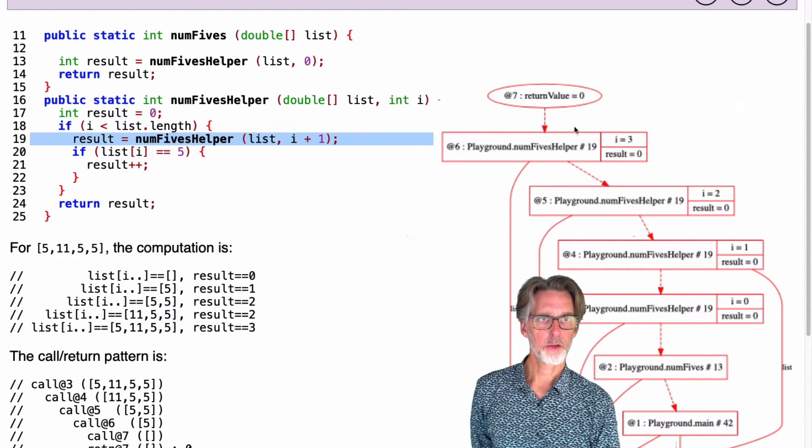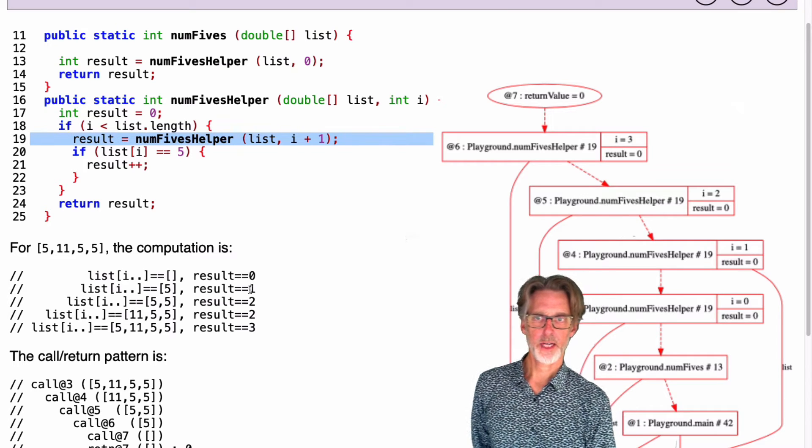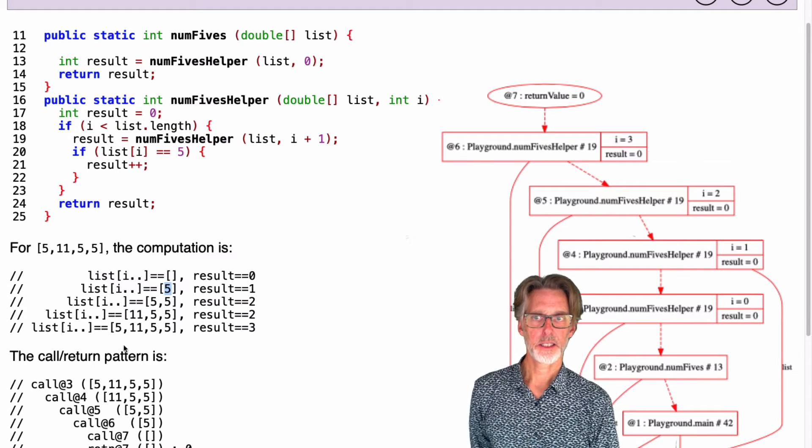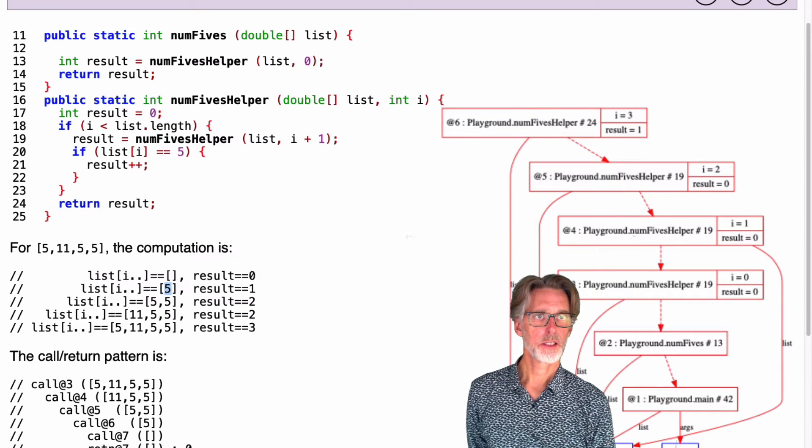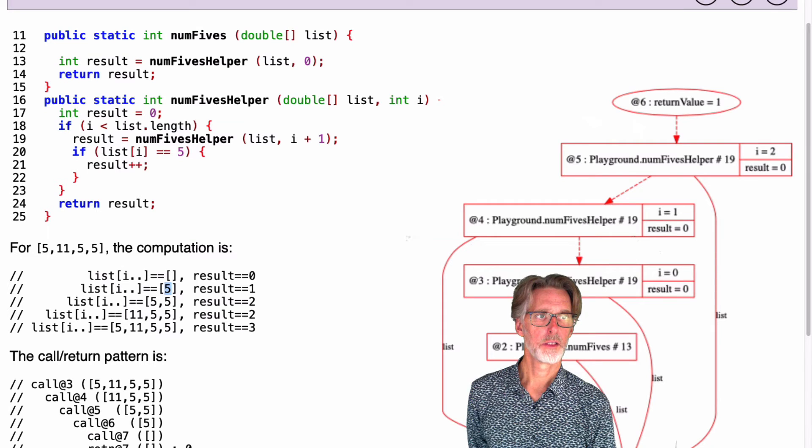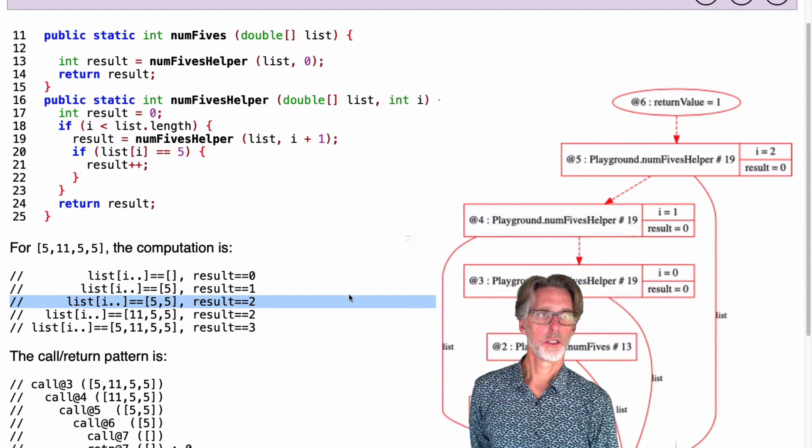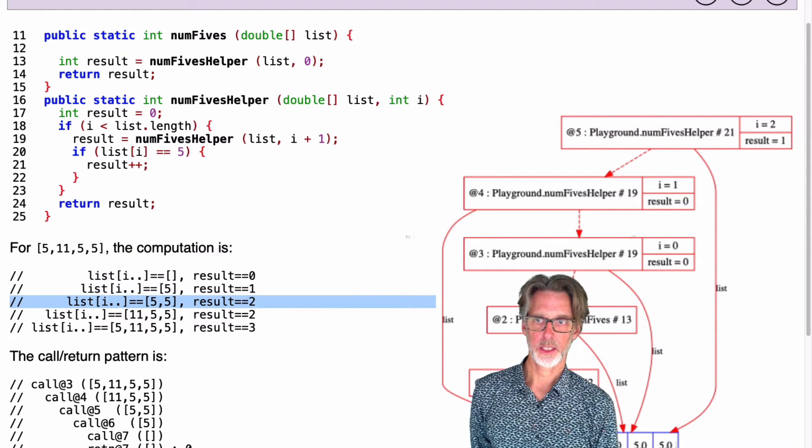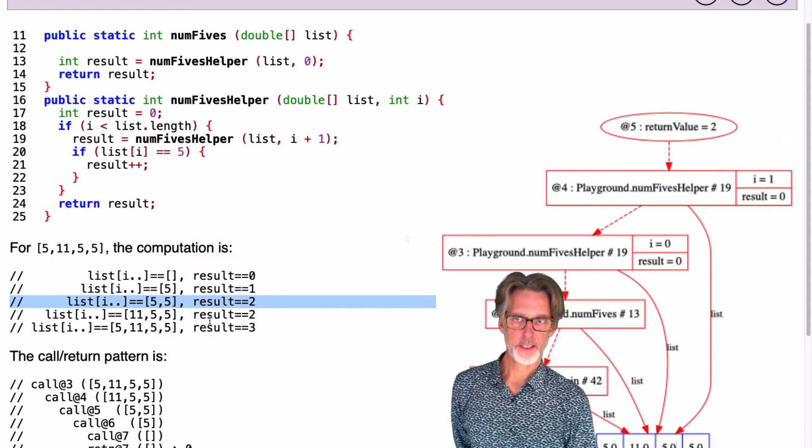So the return value of zero is passed back to the next iteration. So here you can see we've got the return of zero, which is now going to this iteration. And this iteration where we're looking at this element can now look at its element and return one. So now we're passing one back to the next iteration, which can add that into its result. In this case, we see something and we'll return two.